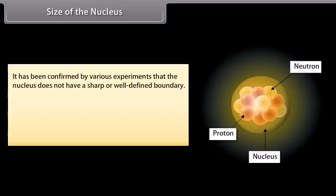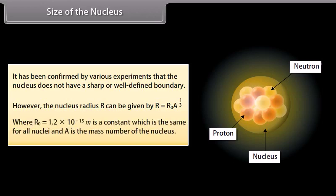Size of the nucleus: it has been confirmed by various experiments that the nucleus does not have a sharp or well-defined boundary. However, the nucleus radius R can be given by R = R₀ × A^(1/3), where R₀ = 1.2 × 10^-15 m is a constant which is the same for all nuclei, and A is the mass number of the nucleus.